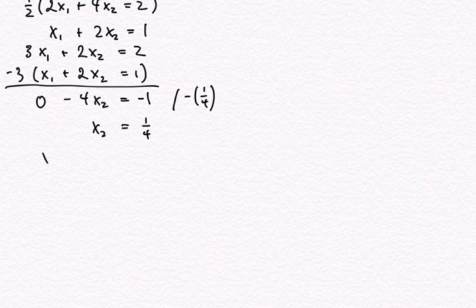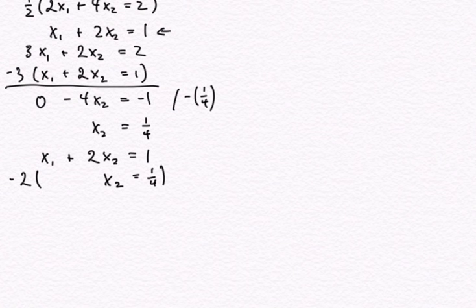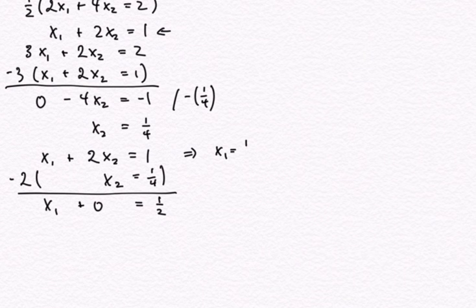The value for x1 we obtain from the equation x1 plus 2x2 equals 1. Being very mechanical, I subtract minus 2 times the equation x2 equals one quarter. So I get x1, and 2x2 minus 2x2 is 0, equals 1 minus 2 times a quarter, which is one half. So our solution is x1 equals one half and x2 equals one quarter.